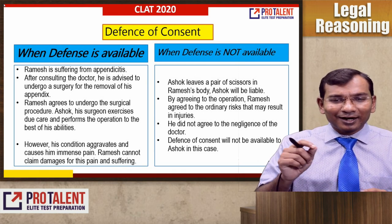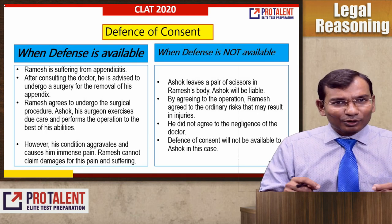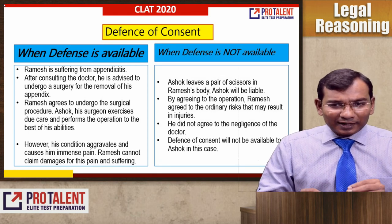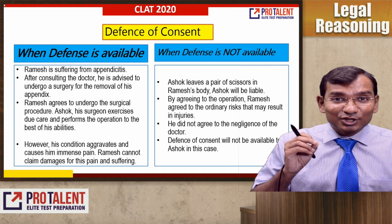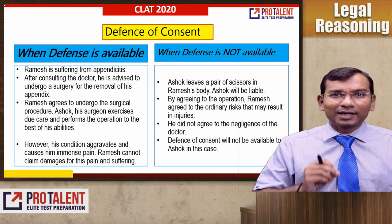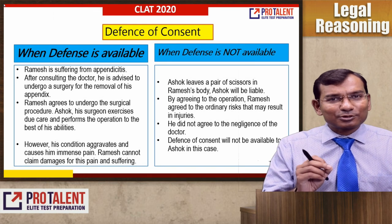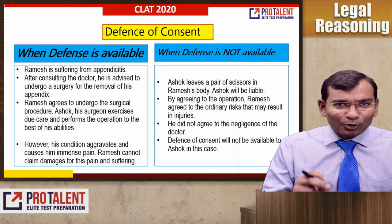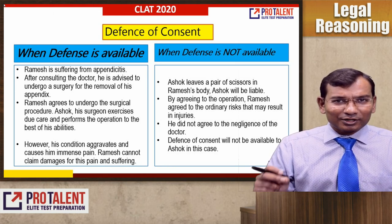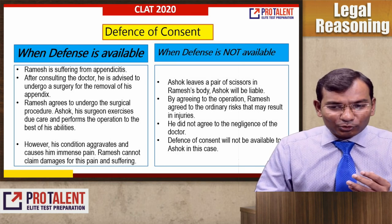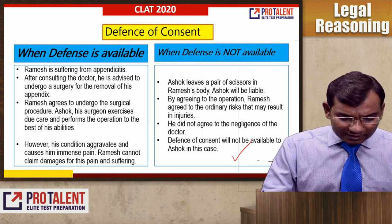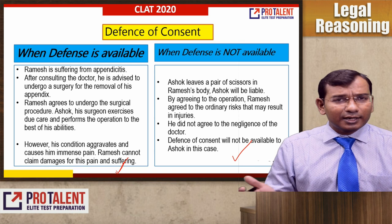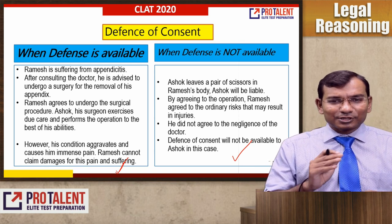Now, suppose Ashok performs the operation and forgets his scissors inside Ramesh's body. Ramesh had not agreed to that problem. Ramesh agreed that Ashok would perform the operation correctly — forgetting scissors is Ashok's negligence. Here, Ashok will get no defense. This is how consent will be available in one scenario but not in another — where the harm exceeds what was consented to.